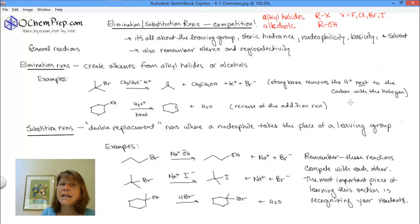So, this little slide is an overview of the two reactions. Elimination reactions create alkenes from alkyl halides or alcohols. So, if we look, here's an alkyl halide. I'm going to treat it with a strong base, and with this strong base, it's going to pull a proton.